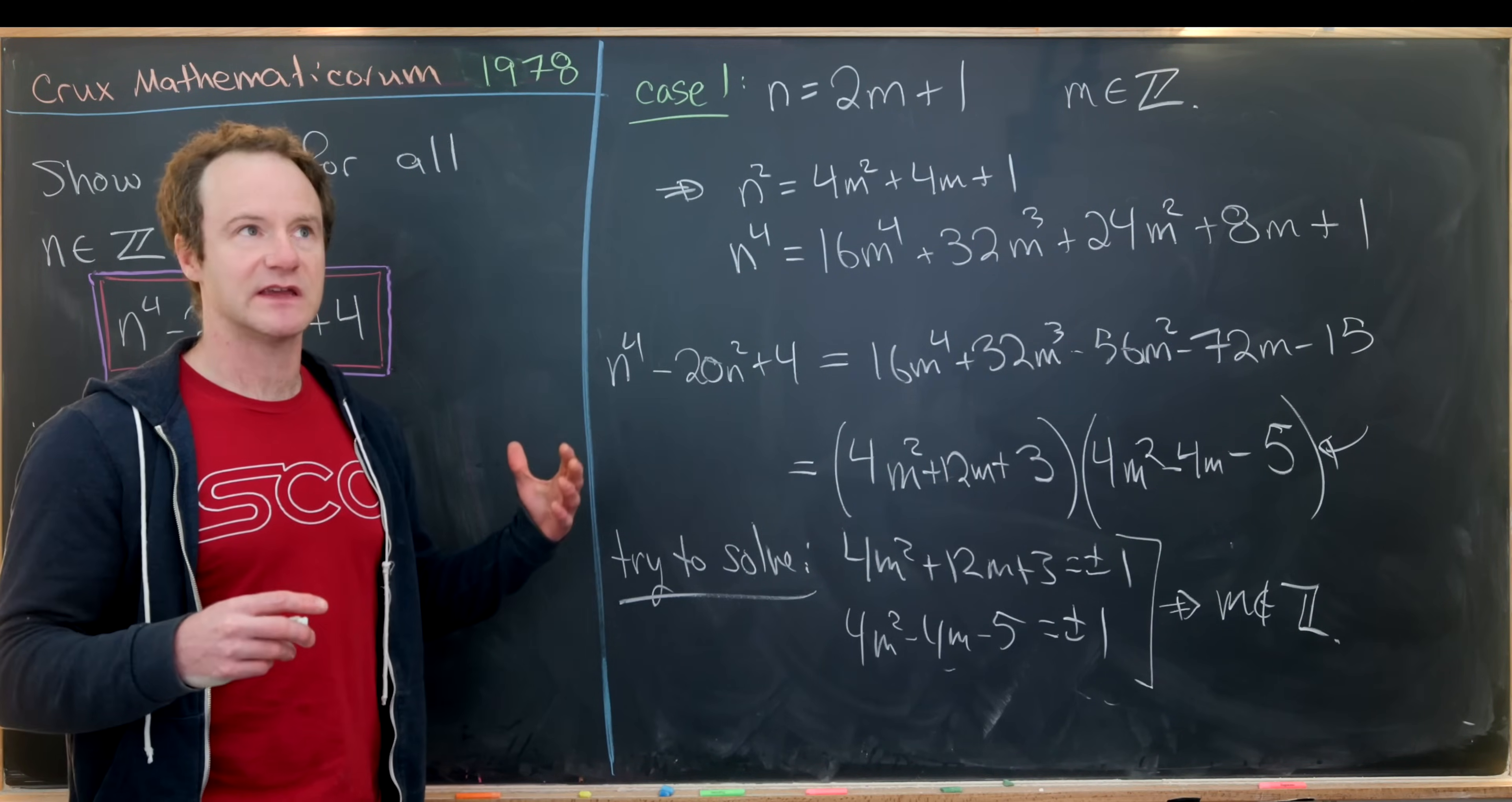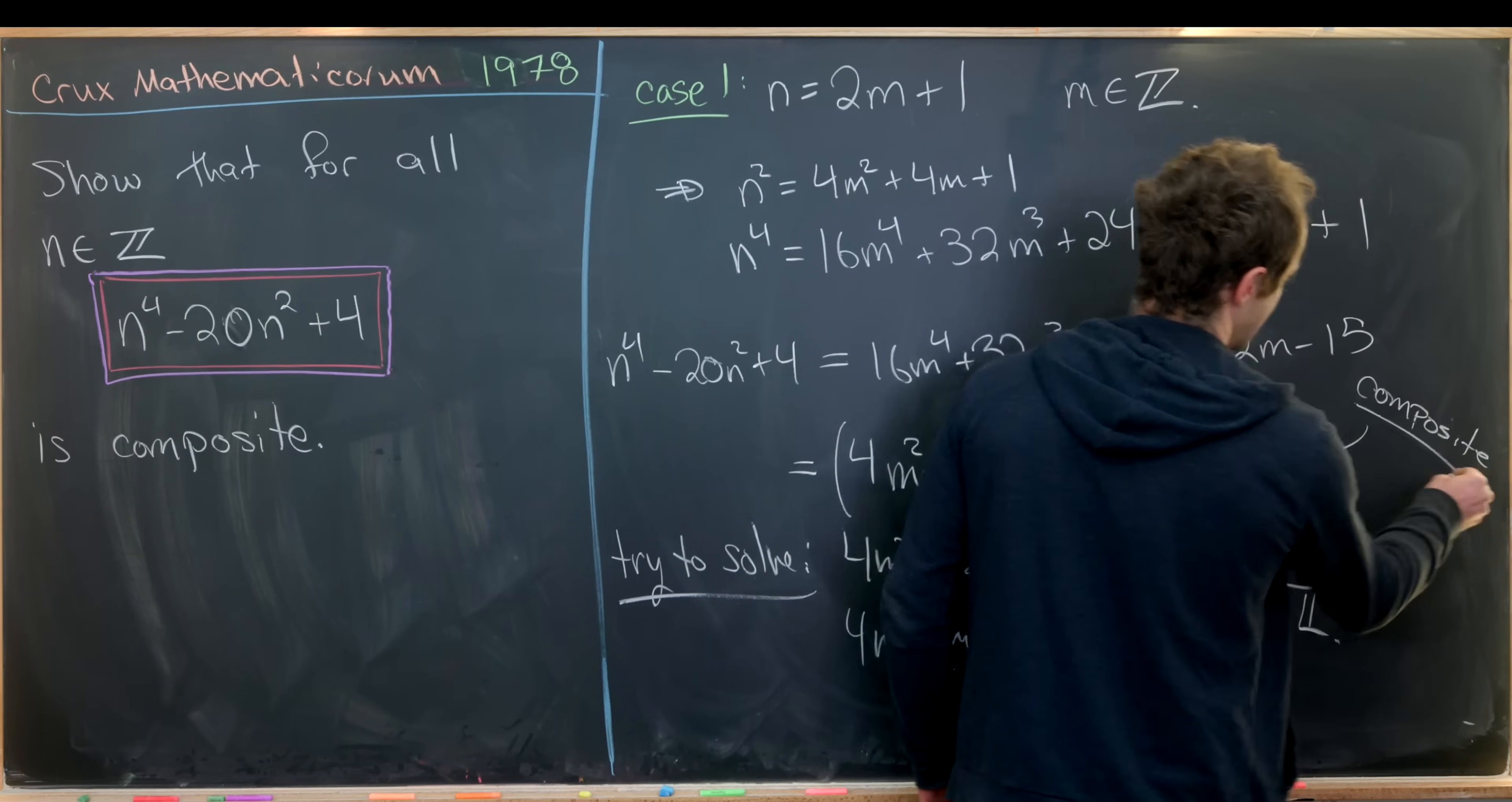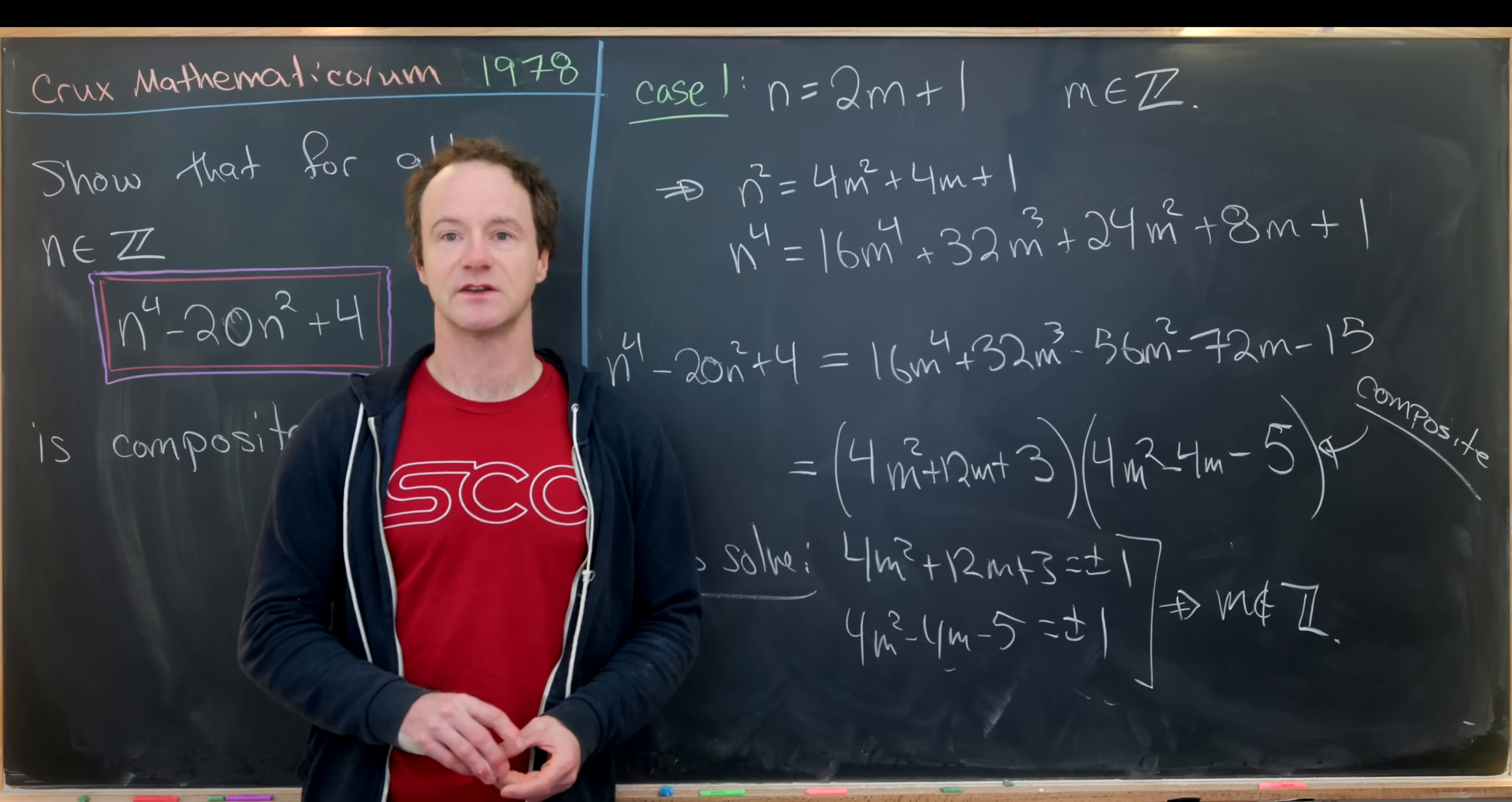What I mean by non-trivially is as some number which is not equal to 1 times another number which is not equal to 1, making this thing composite. That covers our second case. The first case was when n was even, which means we have established that this object is always composite. And that's a good place to stop.